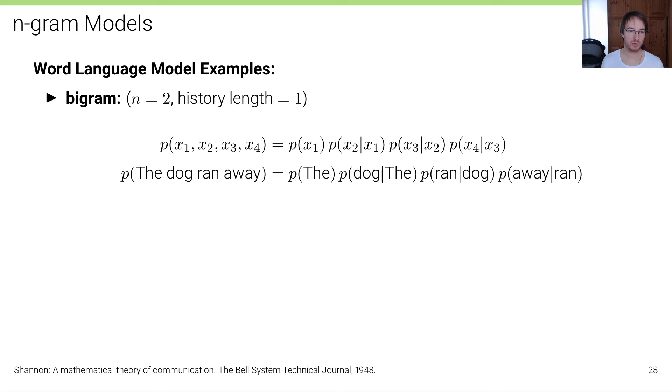Here are word language model examples. The first is for bigrams where n=2, or in other words, the history length is one. So if we have four words x1 to x4, then we have p(x1) times p(x2|x1) times p(x3|x2) times p(x4|x3). We can see that the context here is cut after the preceding word - we have p(x3|x2) instead of p(x3|x2,x1).